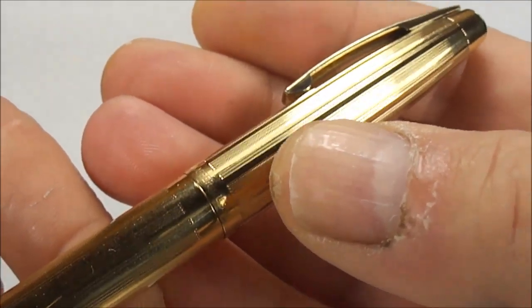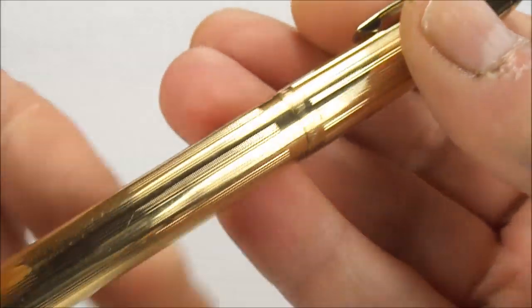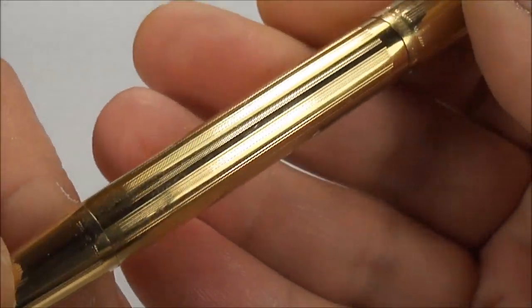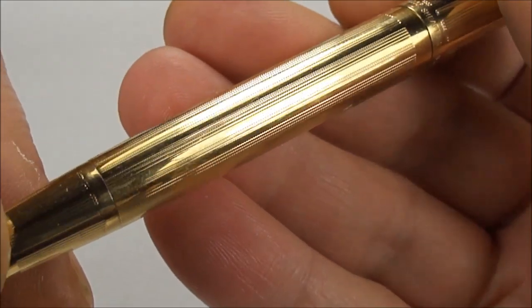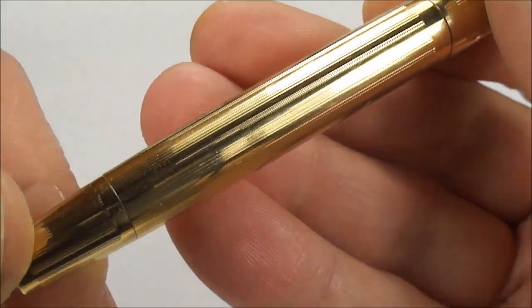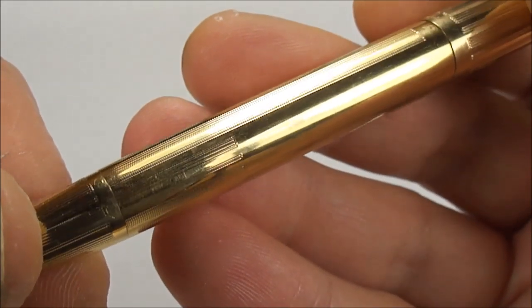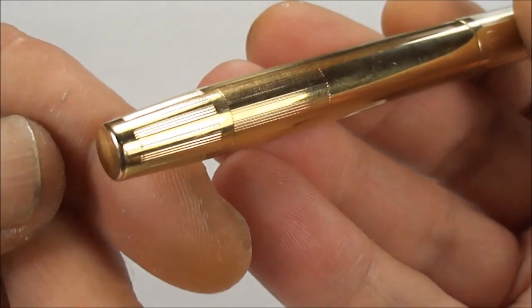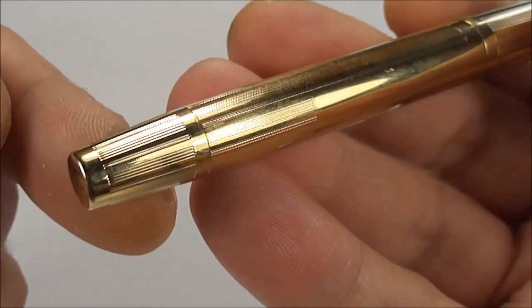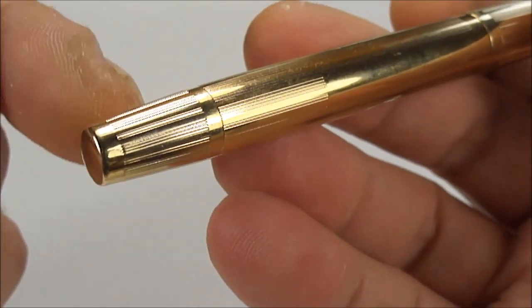That pattern carries on on the barrel. You can see if we just turn it around, we've got the empty cartouche to the barrel, and then to the end there we've got the filler knob, which we'll show you in a moment.